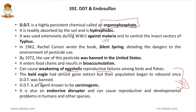DDT is an agent known to be carcinogenic — it can cause cancer. It is also an endocrine disruptor, causing reproductive and developmental problems in humans and other species. When it affects growth hormone, pituitary hormone, thymus hormone, and parathyroid hormone, various coordination and body activities are disrupted.